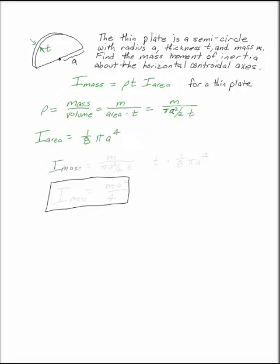The mass moment of inertia is m over pi a squared over 2 times t times 1/8th pi a to the 4th, which simplifies to ma squared over 4.